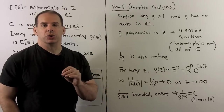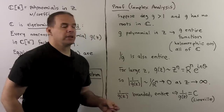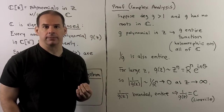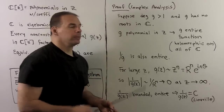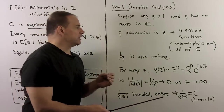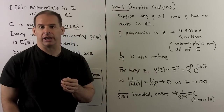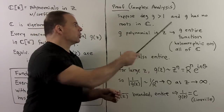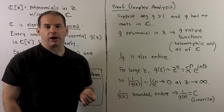Let's assume we have g, a polynomial with degree greater than one, and g has no roots in the complex plane. Because g is a polynomial, g is an entire function — holomorphic at every point in the complex plane. Because g has no roots in the complex plane, 1/g is also entire.